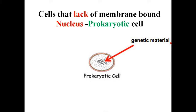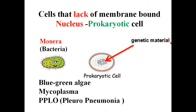Prokaryotic cells are represented by bacteria, blue-green algae, mycoplasma, and pleuroneumonia-like organisms. Monira is a bacterial group of organisms. Blue-green algae are autotrophic photosynthetic bacteria. Mycoplasma is the smallest living organism in the world. Pleuroneumonia is a disease-causing agent — a disease-causing bacteria.